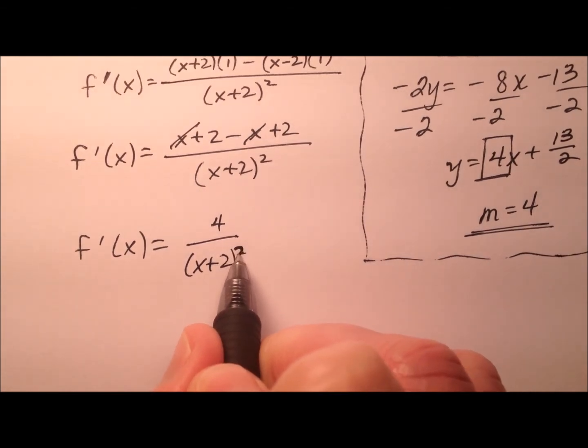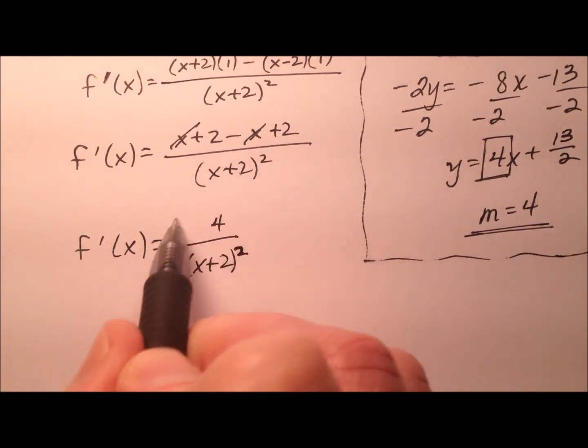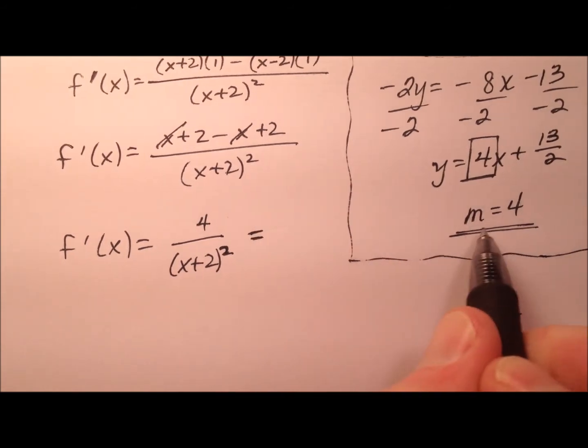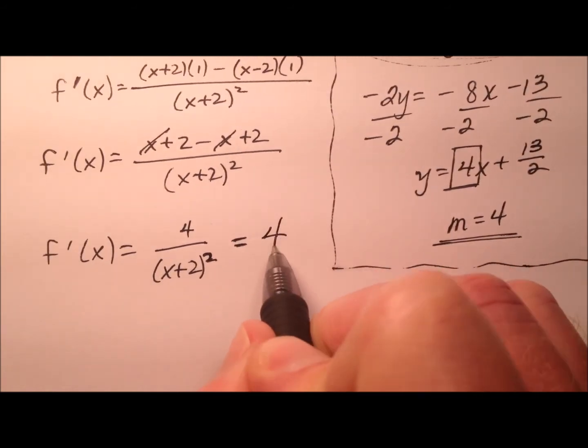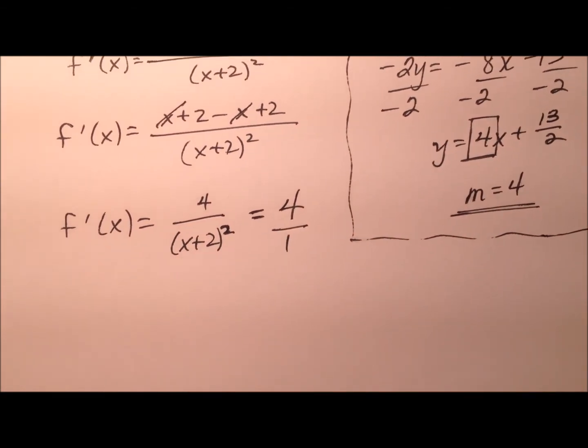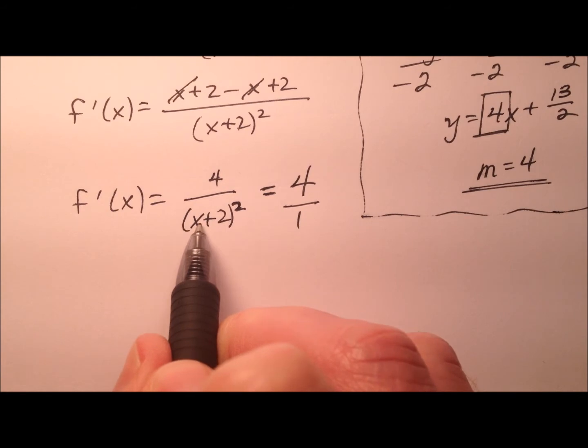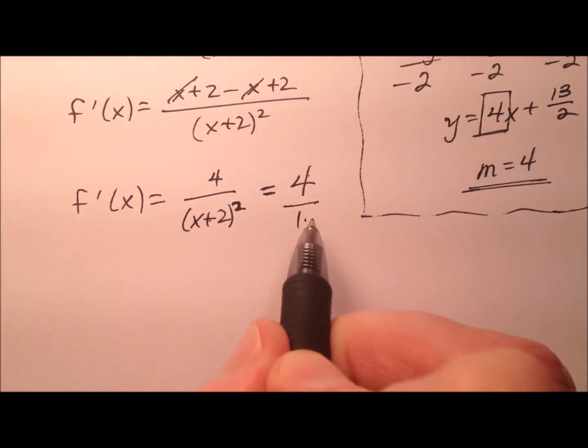All right, so I have an expression here that will give me the slope for any value of x. I know that that needs to be 4. So we can just put it 4 over 1. So I need this 4 over the quantity x plus 2 squared to be 4 over 1.